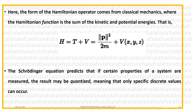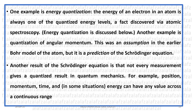The Schrödinger equation predicts that if certain properties of the system are measured, the result may be quantized — meaning only specific discrete values can occur. A property is quantized when it is an integral multiple of a fundamental value. For example, the energy of an electron is quantized, and the angular momentum is quantized. These are all predictions of the Schrödinger equation that have been verified in experiments. However, not every measurement gives a quantized result — for example, position, momentum, and time are continuous quantities.